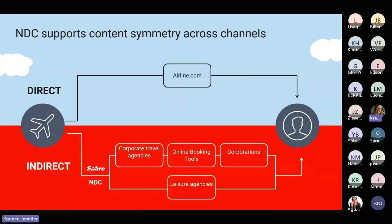Specifically, the move from today's EDIFACT messaging and communication standards to a SOAP XML messaging and communication standard. The aim is to improve the retailing experience across third parties to create symmetry across the distribution path. As you are aware, airlines are building new retailing capabilities and deploying smarter offers via their direct sales channel. NDC enables those smart offers to be distributed via the indirect channel as well — the indirect channel is where Sabre plays.